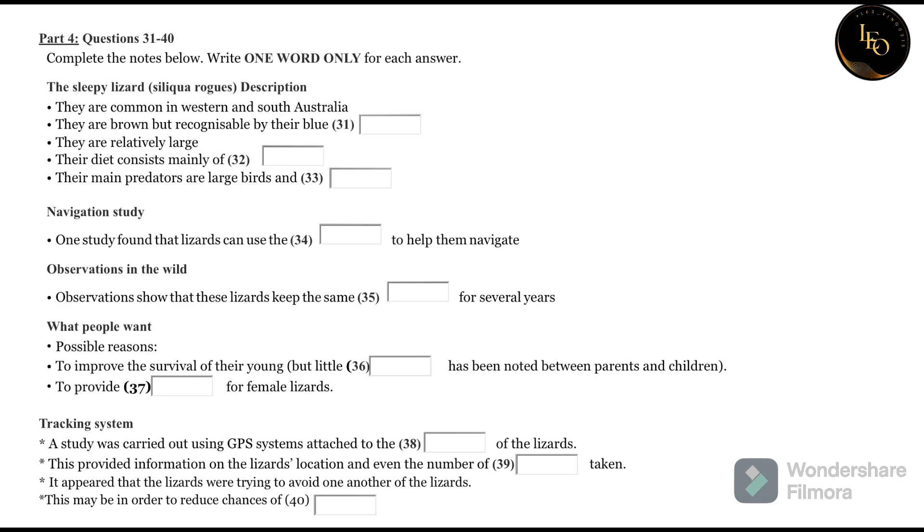Observations of these lizards in the wild have also revealed that their mating habits are quite unusual. Unlike most animals, it seems that they're relatively monogamous, returning to the same partner year after year. And the male and female also stay together for a long time, both before and after the birth of their young. It's quite interesting to think about the possible reasons for this. It could be that it's to do with protecting their young. You'd expect them to have a much better chance of survival if they have both parents around. But in fact, observers have noted that once the babies have hatched out of their eggs, they have hardly any contact with their parents. So there's not really any evidence to support that idea.